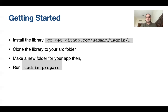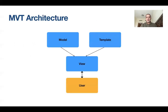To start a new application, make a new folder and run the command `uadmin prepare`. The library is built around the MVT architecture, which utilizes three parts: M for model, V for view, and T for template. The user communicates with the view part of your application, while your model and template feed the view with data and design to generate the user interface.